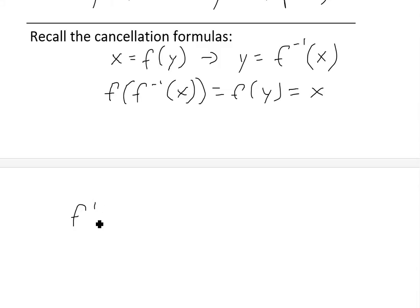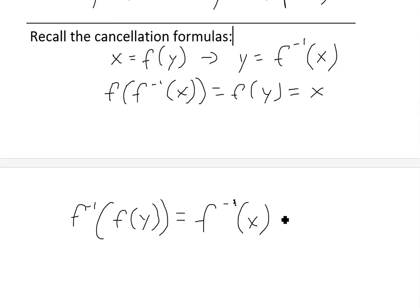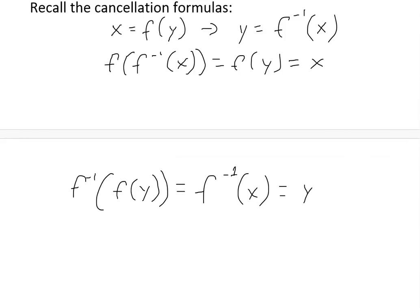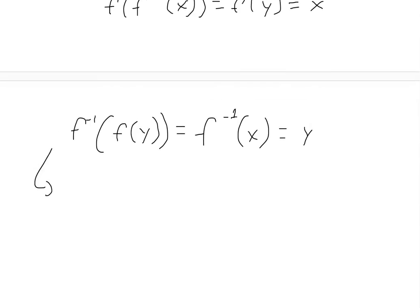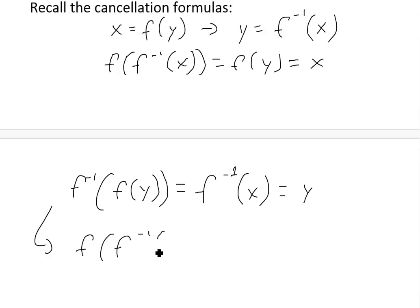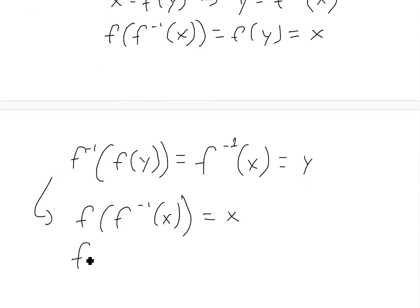The other cancellation equation is when we apply f inverse to the function: f inverse of f(y). That f(y) is just x, so we have f inverse of x, which just equals y. So these cancel out too, giving us x back. It doesn't matter which variable you use — x or y — these cancellation equations hold: f of f-inverse of x equals x, and f-inverse of f of x equals x.